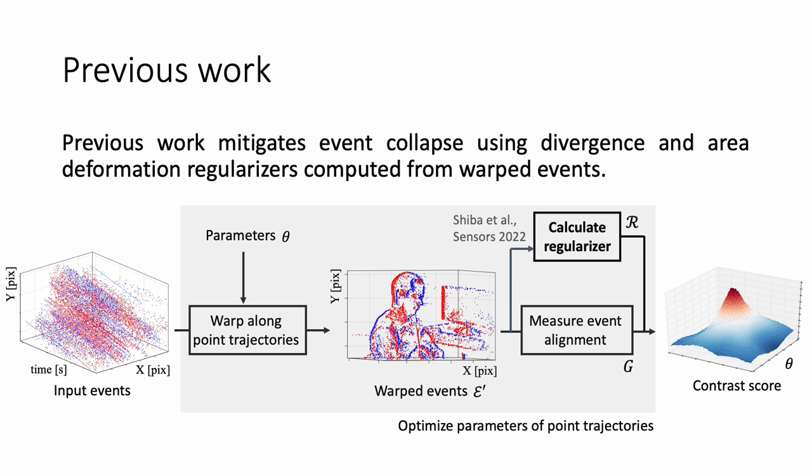Previous work that mitigates event collapse in the contrast maximization framework uses divergence and area deformation regularizers. The computation is based on warped events.